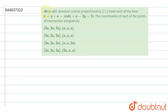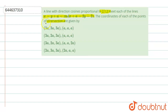The question says that a line with direction cosines proportional to 2, 1, 2 meets each of the lines: x equals y plus a equals z, and x plus a equals 2y equals 2z. The coordinates of each of the points of intersection are given by — so let's solve this.